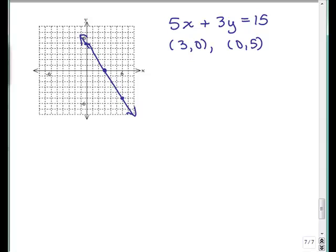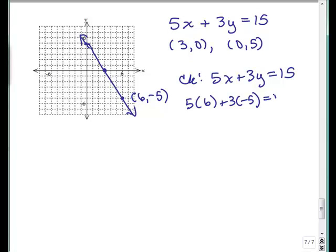Let's check it. You want to make sure that's really on the line. So, here's my checkpoint. So, we're going to put in 6 for x, negative 5 for y. That's the question. 30 plus negative 15 equals 15. Yes, it's true.